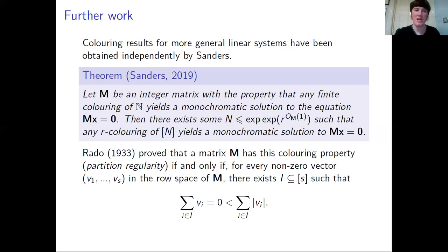For completeness, we have a thorough understanding of which systems of equations have this colouring property — that is, when you colour the positive integers you always get a monochromatic solution. This was worked out by Rado, who was actually a student of Schur, and the criterion he obtained is written at the bottom of the slide.